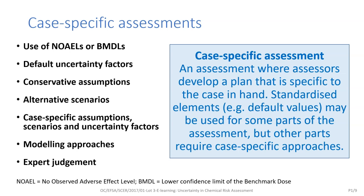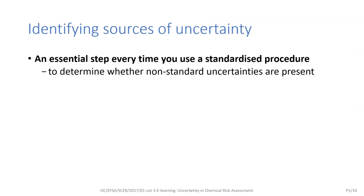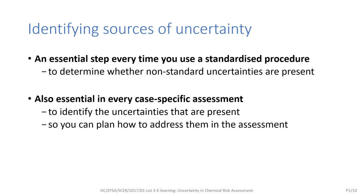The specific methods needed for uncertainty analysis in a case-specific assessment depend on what types of uncertainties are present. So the first step is to identify the sources of uncertainty in your assessment. Identifying sources of uncertainty is an essential step every time you use a standardized procedure — to determine whether non-standard uncertainties are present — and also in every case-specific assessment, to identify the uncertainties that are present so you can plan how to address them.